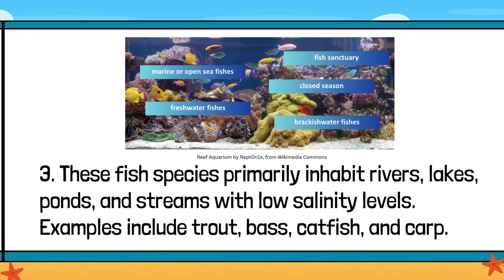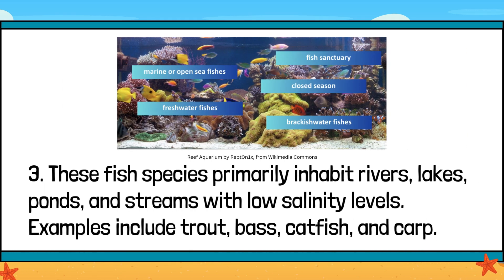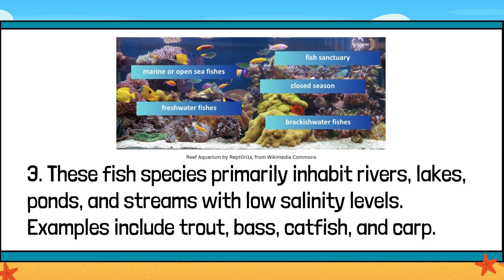3. These fish species primarily inhabit rivers, lakes, ponds, and streams with low salinity levels. Examples include trout, bass, catfish, and carp.